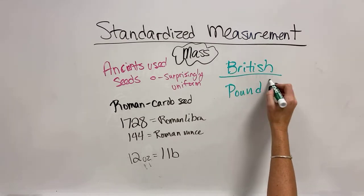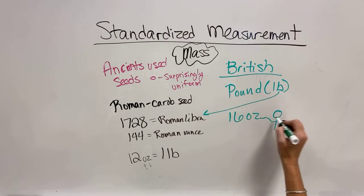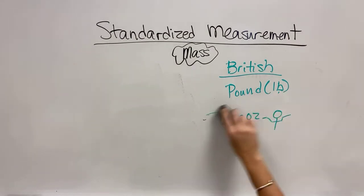The British come along and they decide they're going to make the British pound. They're going to use the LB because a Libra was a pound in the Romans. That's why it's LB. And we're going to make it 16 ounces because we're British and we do what we want. So, we've got all these measurements cruising around.